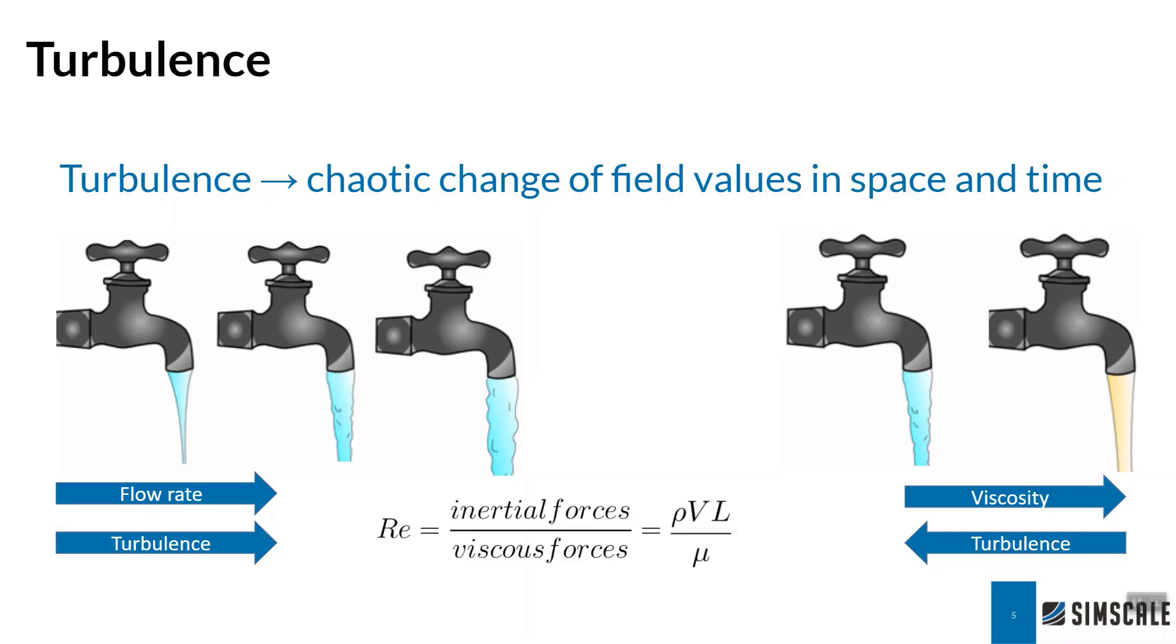Acting against the flow rate, or the turbulence, we have viscosity. As a fluid's viscosity increases, think honey compared to water, the turbulence tends to decrease. This is because viscosity acts as a resistance to shear stresses, and that resistance adds order to the flow.